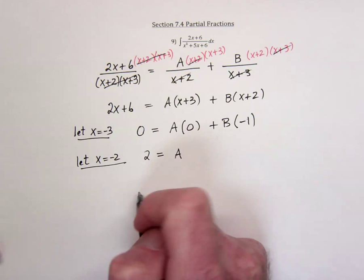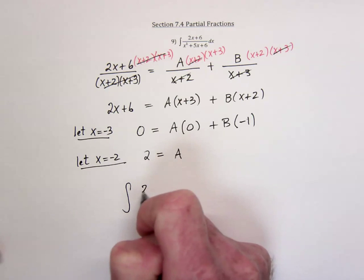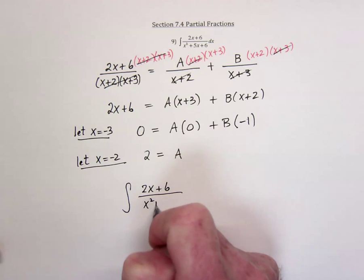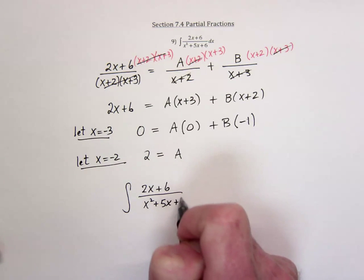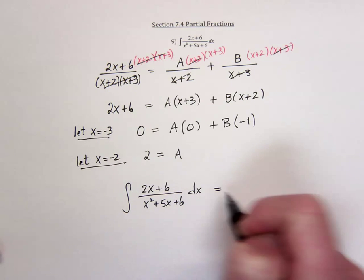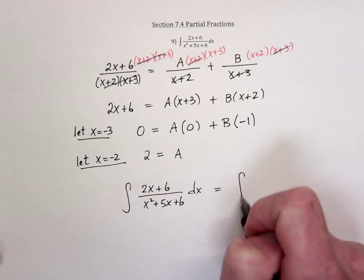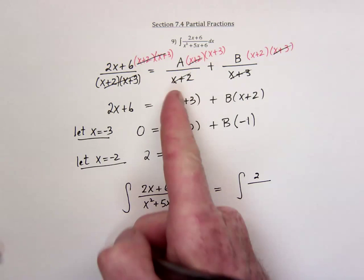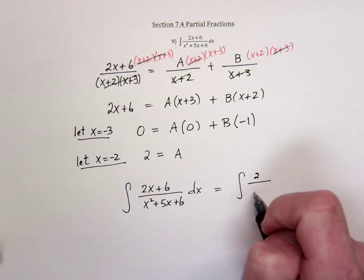So that means that the original problem, 2x plus 6 over x squared plus 5x plus 6, can actually be replaced with just an A, which is 2, over, the A was over the x plus 2.